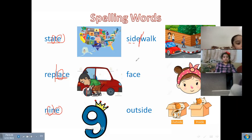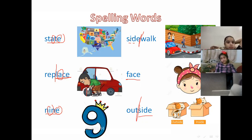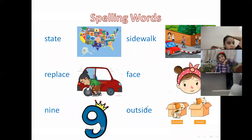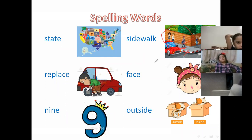'Face' — here we have consonant-vowel-consonant and final E. 'Outside' — the word 'side' follows consonant-vowel-consonant-final E, so we have a long I sound. So again: state, replace, nine, sidewalk — we should walk on the sidewalk, we shouldn't walk on the road — face, and outside.